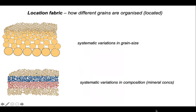Location fabric relates to how grains are organised within a rock. They can be defined by systematic variations in grain size and/or systematic variations in composition or mineral concentrations through that rock.